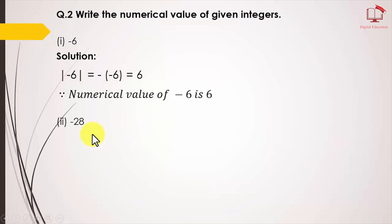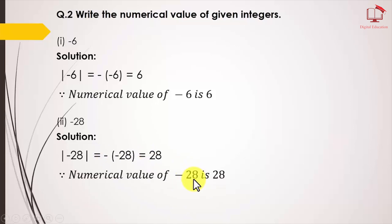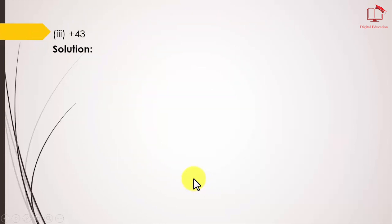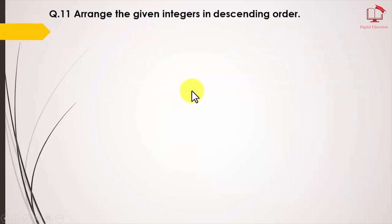Part 2: Find the numerical value of minus 28. We draw a bar over minus 28. When we remove the bar, we get another minus sign. Minus times minus gives a positive, so the numerical value of minus 28 is 28. Part 3: The integer 43 already has a positive sign, so the numerical value of 43 is also 43.